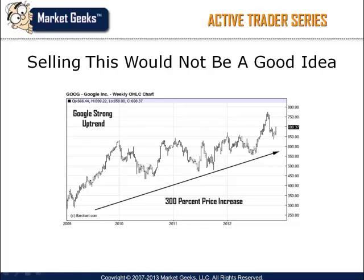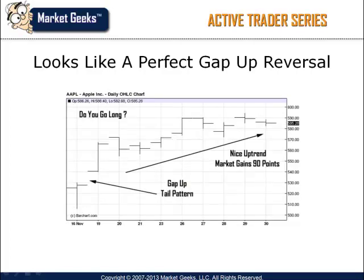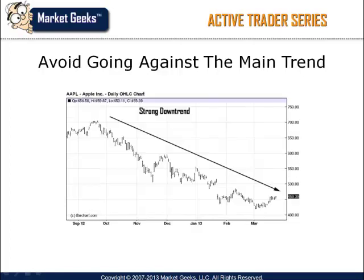Why do traders insist on trading against the main trend? I still cannot figure it out for the life of me. There are thousands of stocks to pick from, but traders love to take positions against the main trend. You can see how Apple is demonstrating the perfect tail gap strategy. The tail strategy is one of the best technical analysis strategies, but you have to make sure and follow the main trend. Going against the main trend is one rule professional traders never break. This is the same stock but with a longer time frame — I would avoid taking this position no matter how good the setup looked. I always look at the big picture when I start my analysis.